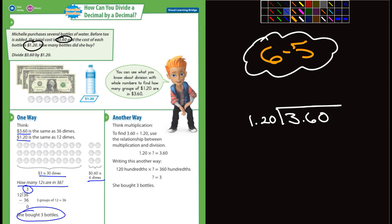The other way to think about it is in terms of multiplication. Find 360 divided by 12. Use the relationship between multiplication and division. So here they set it up for us: $1.20 times what equals 360. Writing this another way is 120 hundredths times blank equals 360 hundredths. So again, she bought three bottles.